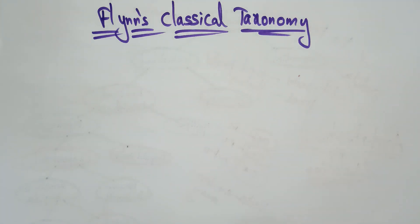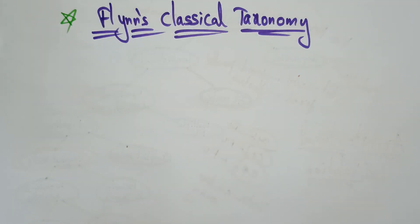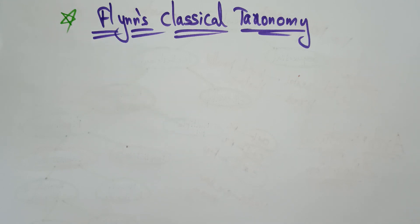Hi students, welcome back. Coming to the next topic in advanced computer architecture: Flynn's Classical Taxonomy. I already explained this concept in the Education For You channel, but there I had given only the concepts of SIMD, MIMD, MISD, SISD — what the meaning of that is. So in this session I'm going to give you a clear, in-depth explanation of how the architecture is designed and how the internal calculations are going on, with an example.